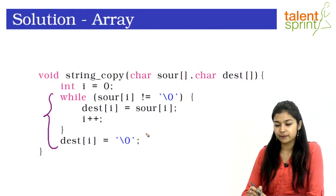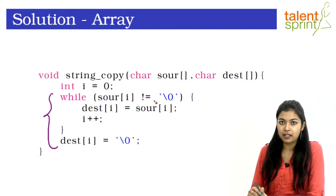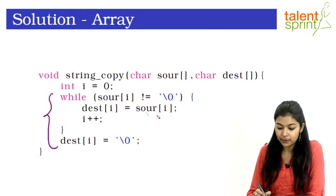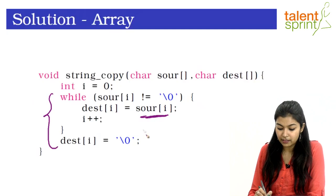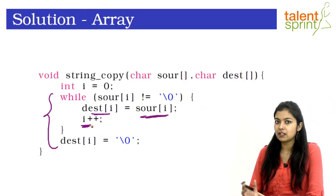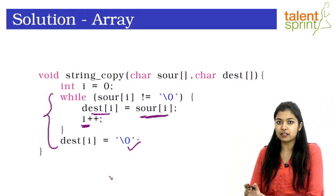We use a while loop that runs until we reach the end of the source array. Inside the while loop we are simply copying each character from the source array to the destination array and incrementing i for the next iteration — fairly simple. At the end we add the null terminator to the destination array and we are done.